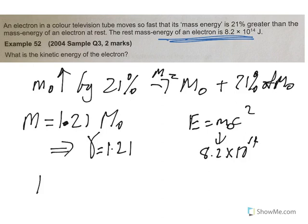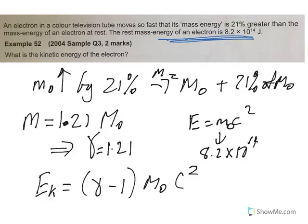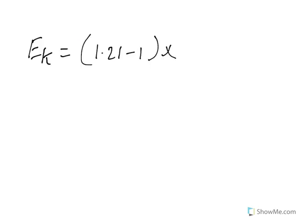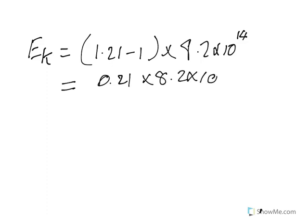That means that if we go back to Einstein's equation there, the relativistic mass, that means that the Lorentz factor would be 1.21. Alright, so we're going to then use that to help us figure out the kinetic energy. Alright, so the other thing we were told is that the rest mass energy was that. So the rest mass energy we're talking about, that's E equals MC squared, and that's M₀ C squared. So the rest mass energy, this bit here, is 8.2 by 10 to the 14 joule.